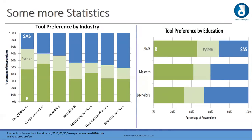From an education standpoint, R is mostly used at the PhD level, SAS is used at the Bachelor's level, and Python is used across all three levels — Bachelor's, Master's, and PhD. Ultimately it depends upon the individual to choose which software they prefer.